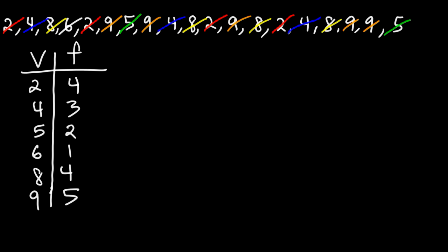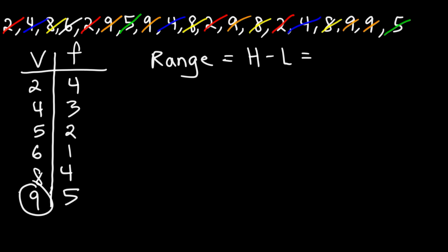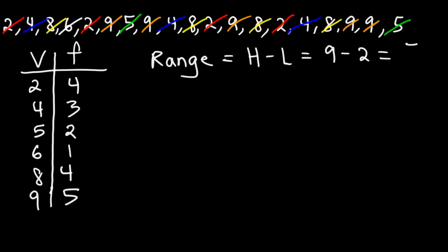So this is our simplified frequency table. Next, let's calculate the range. As we said before, the range is the difference between the highest value and the lowest value. We can easily see from our table that the highest value is 9 and the lowest value is 2, so 9 minus 2 is 7. That's going to be the range for this example.